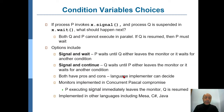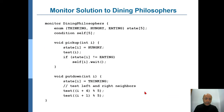For example, in Concurrent Pascal we have monitors implemented with a compromise: P executing the signal immediately leaves the monitor, and Q is resumed. We also have implementations in different languages like Java, C#, and Mesa. Now let's look at how the dining philosophers problem could be solved using the monitor.